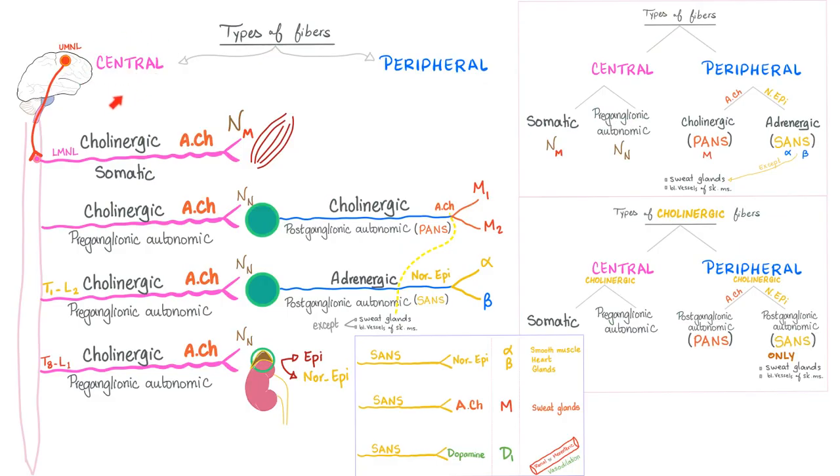Types of fibers: central fibers before the ganglia and peripheral fibers after the ganglia. Let me explain central fibers. This is trying to talk to a skeletal muscle. It's cholinergic because it secretes acetylcholine. What's the receptor? N sub M. N means nicotinic, M means it's a muscle - a skeletal muscle.